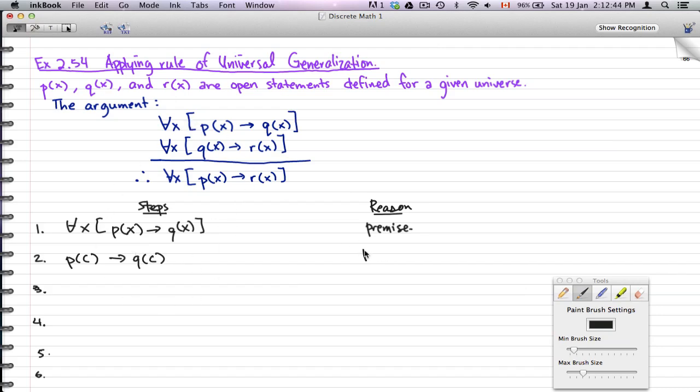it must follow the rule of universal generalization. But using this, we are using something that we already know, the rule of universal specification, that if ∀x [p(x) → q(x)],